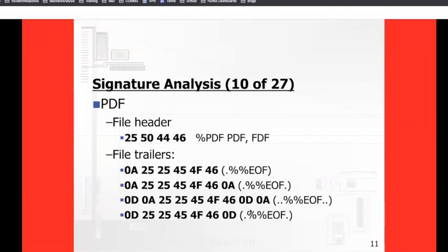If you open a PDF, you'll see in the file header 25, 50, 44, 46. Looking at the right pane, you would actually see the text percent-PDF. So it's very obvious what type of file created what you open in a hex editor. You may encounter a file that says it's a DOCX or PDF but someone changed it on purpose so you're not able to open it. At the very least, you can look it up yourself and figure out this is really a PDF, then change the extension and open the file.